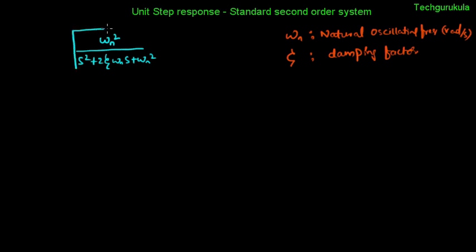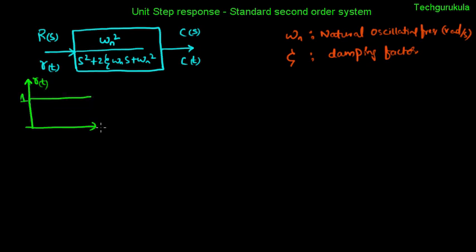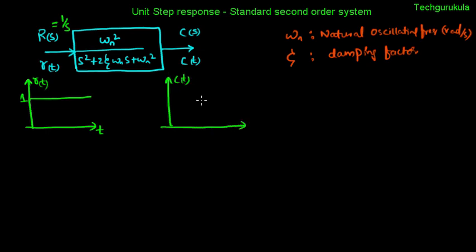For the standard second order system, we apply input r(t) in the time domain, with its s-domain representation r(s). The controlled output is c(t), with Laplace representation c(s). If r(t) is a unit step, it equals 1 for t greater than 0 and 0 for t less than 0. The Laplace of the unit step is 1/s, so r(s) = 1/s. Our intention is to find c(t), the response of the system.